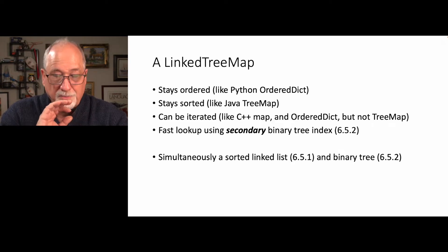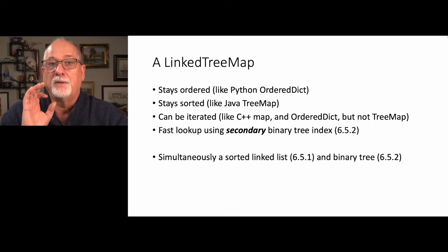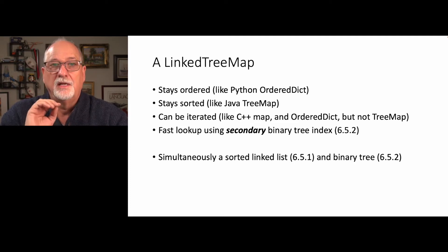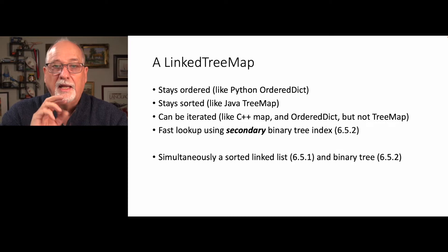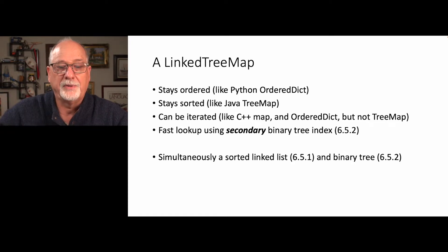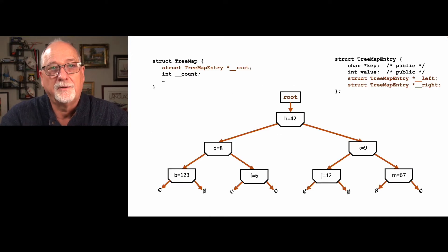We're going to do something that's pretty common in data structures: we're going to maintain two structures simultaneously. The entries are going to maintain simultaneously a sorted linked list through the entries and a binary tree. We're going to look at them separately and then ultimately put them together.